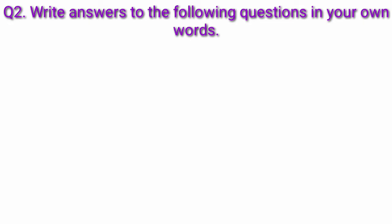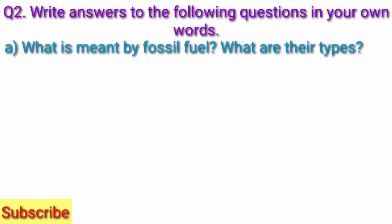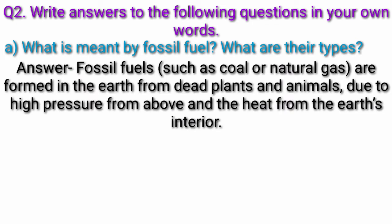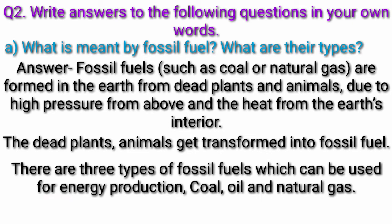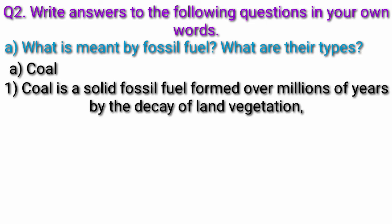Question 2a) What is meant by fossil fuel? What are their types? Answer: Fossil fuels are formed on earth from the dead plants and animals due to high pressure from above and the heat from the earth's interior, transforming dead plants and animals into fossil fuel. There are three types of fossil fuels used for energy production: coal, oil, and natural gas.